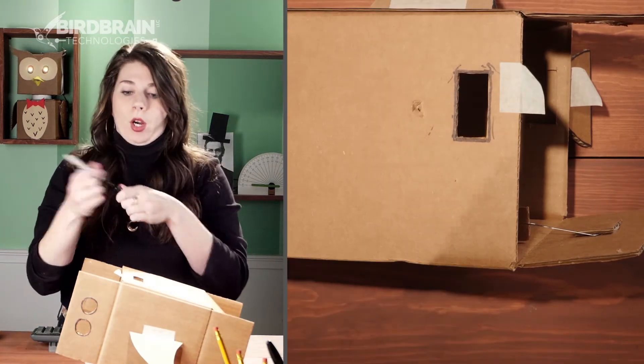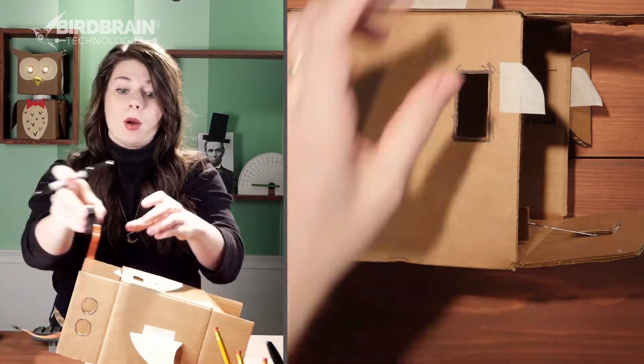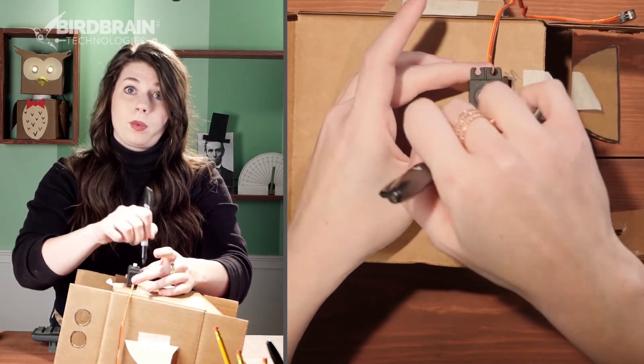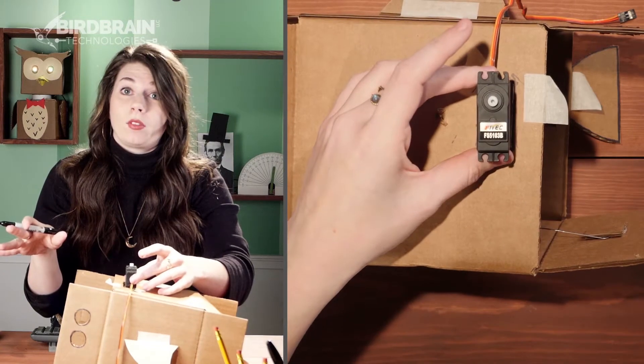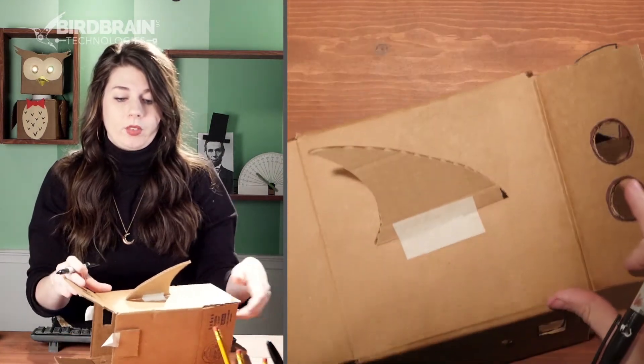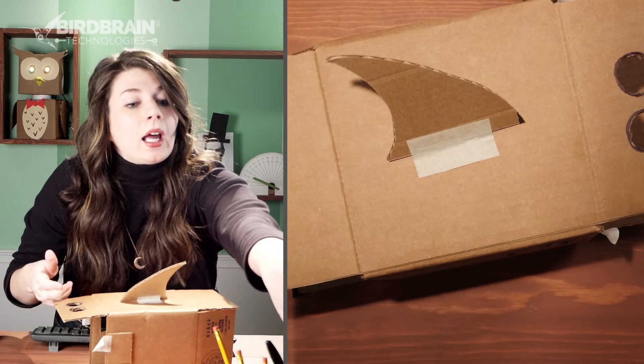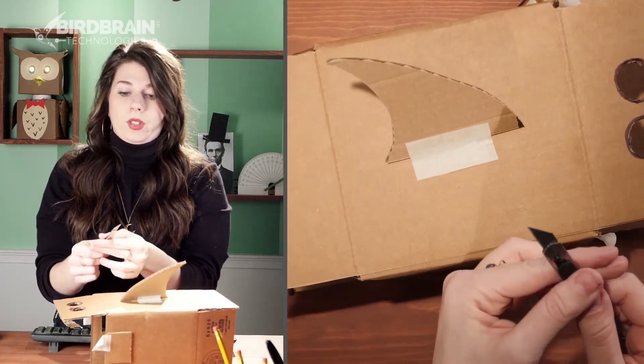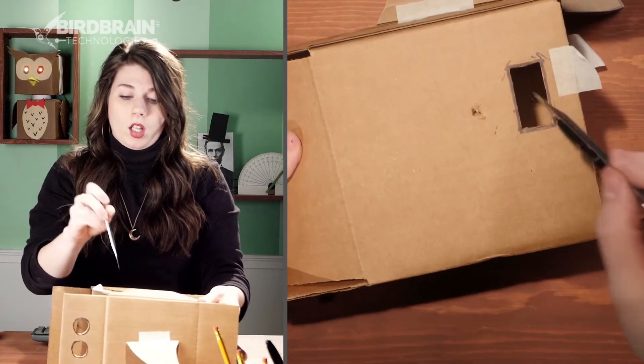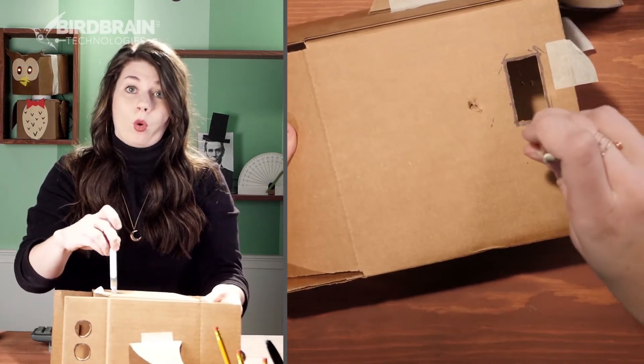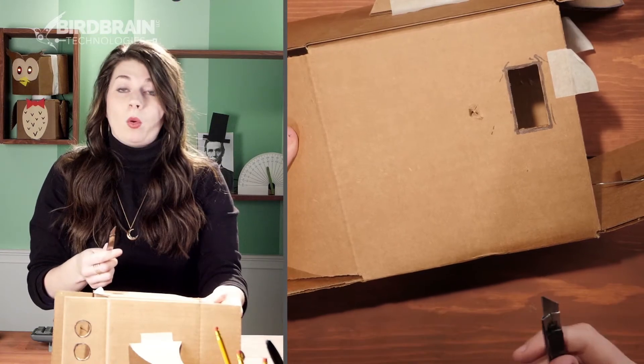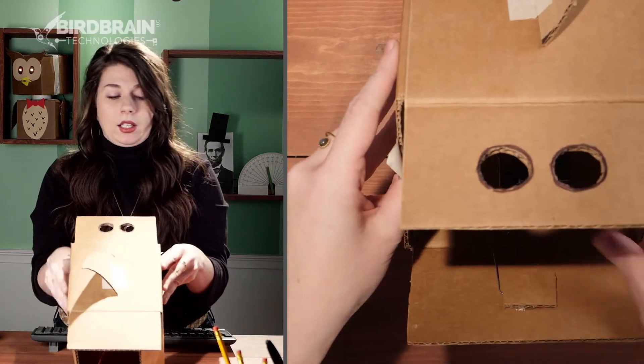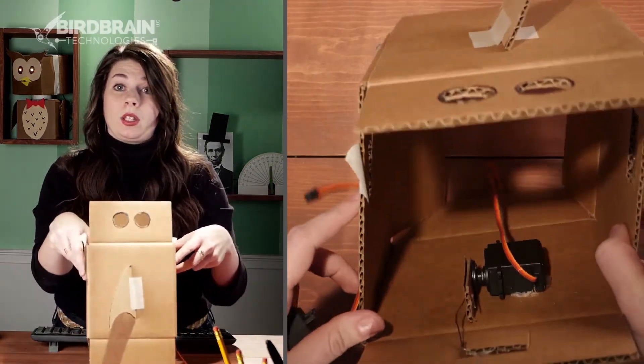Well first thing, we grabbed a marker, and we got our motor, and we traced around all four sides of the motor, like so. Put that down, I'll put my marker back. And then we got a cutting blade, like so, and we cut along the inside of the four marks that we'd made. Well why'd we cut along the inside? Cut along the inside so that when we put the motor in there, it would hold on to it really securely.